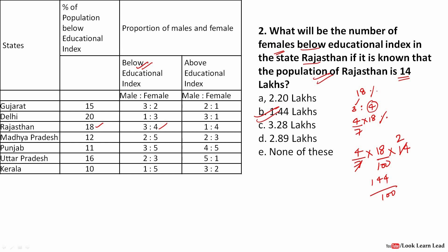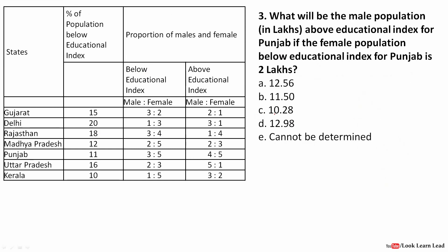The next question asks for the male population above the educational index for Punjab, given that the female population below the educational index is a known value. In Punjab, below educational index is 11 percent, so above would be 100 minus 11 = 89 percent.